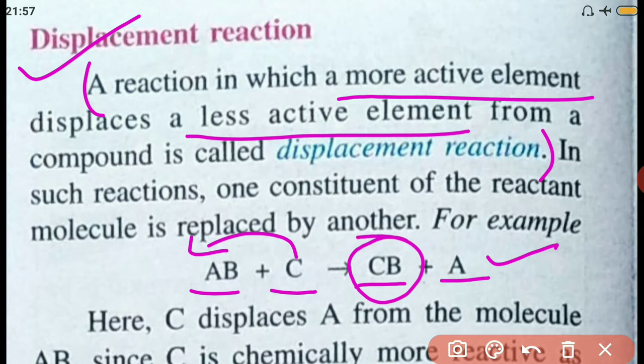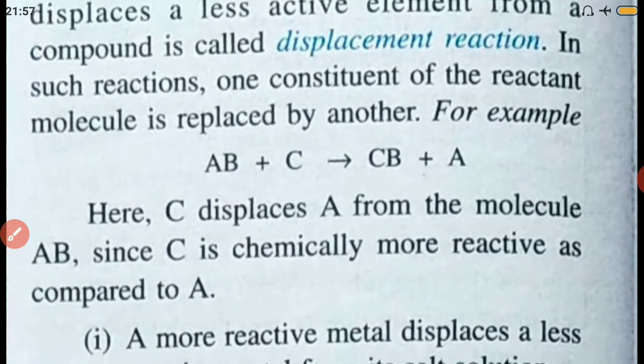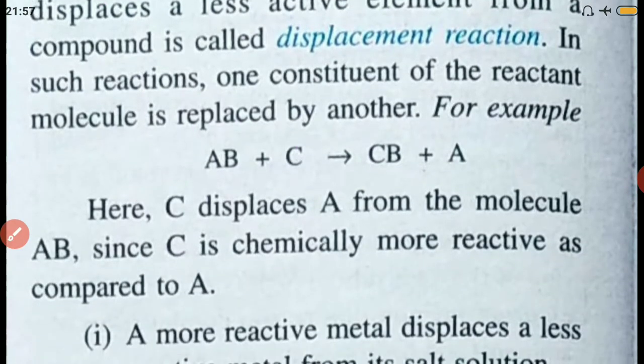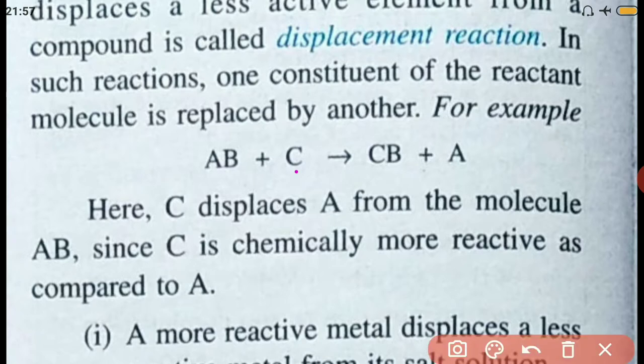So C is much more reactive or more active than A. C displaces A from molecule AB since C is chemically more reactive than A. You might ask why C cannot replace B to form compound AC — this is also possible under certain conditions.